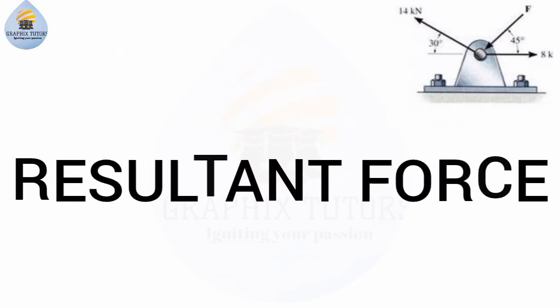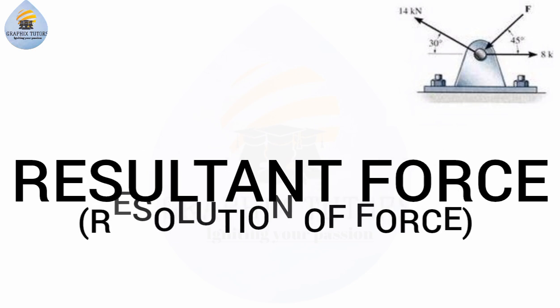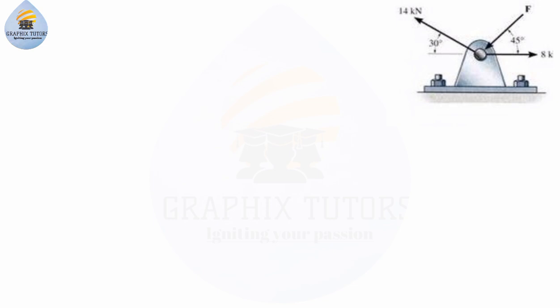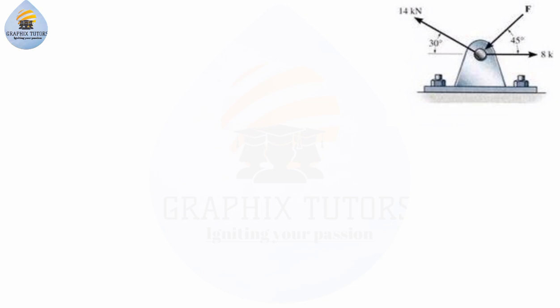Good everyone, my name is Graphics. If you look at the right hand side of the screen, you see a figure with different forces acting at a point. One of the forces is 8 kilonewtons acting horizontally along the x-axis towards the right. Another force F is acting at an angle of 45 degrees inward, as shown in the diagram. F is unknown, and another force is 14 kilonewtons acting at an angle of 30 degrees to the horizontal. We are told to calculate the resultant force.